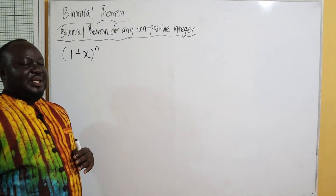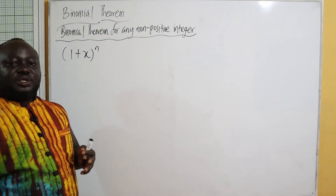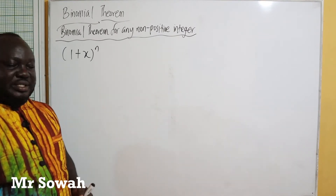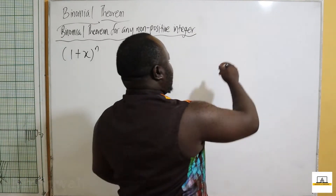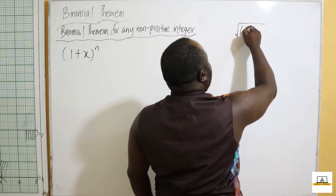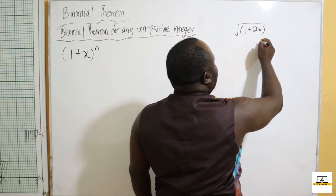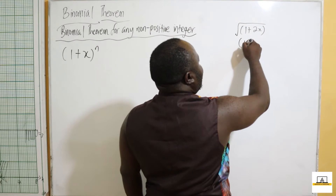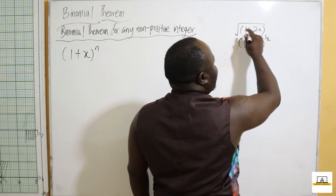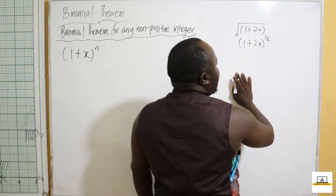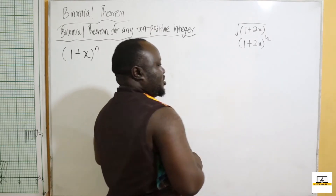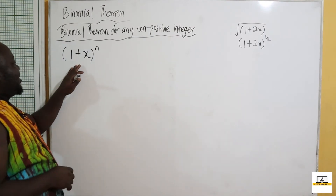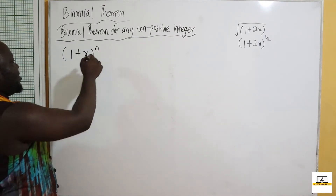Our next topic is the binomial term for any non-positive integer. If I've been given a binomial term to expand — say the square root of one plus two x — I use the binomial theorem. So if I have (1+x)^n, this equals a series expansion.